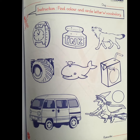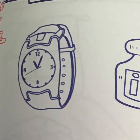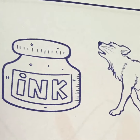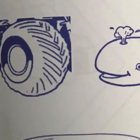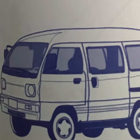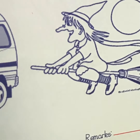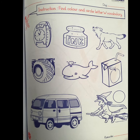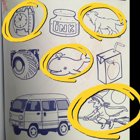On this page we are going to hunt the letter W vocabulary, and we will circle them and then color them. Let's see what we've done. We have a watch, ink, wolf, juice, whale, tire, deer, event, witch. Which ones do we have to color? We have to circle watch, wolf, whale, and witch.